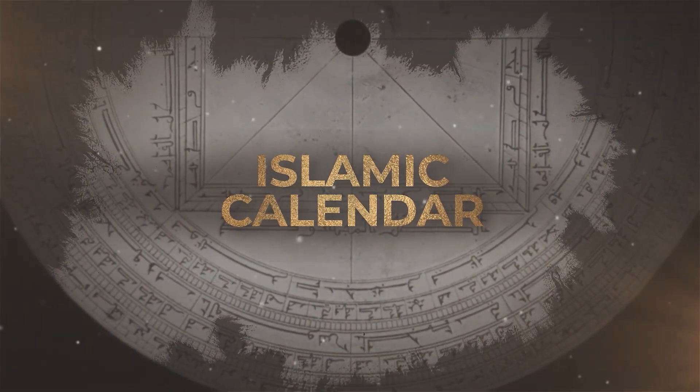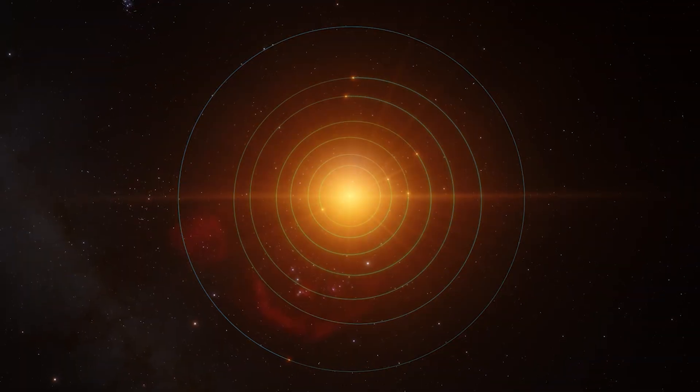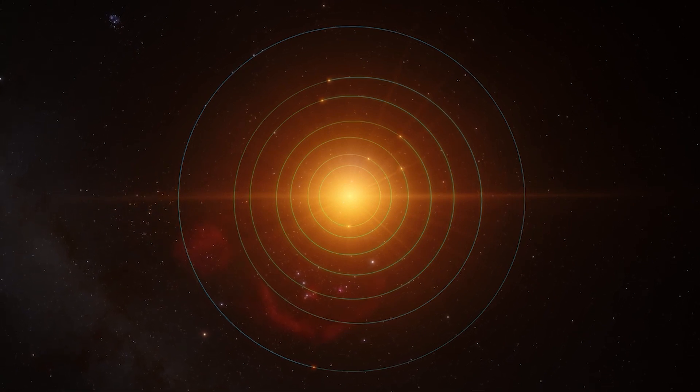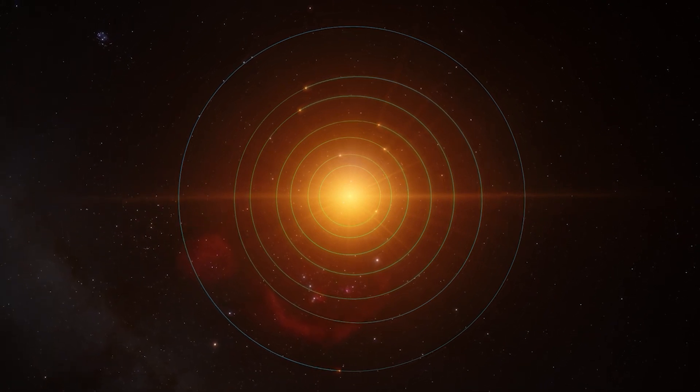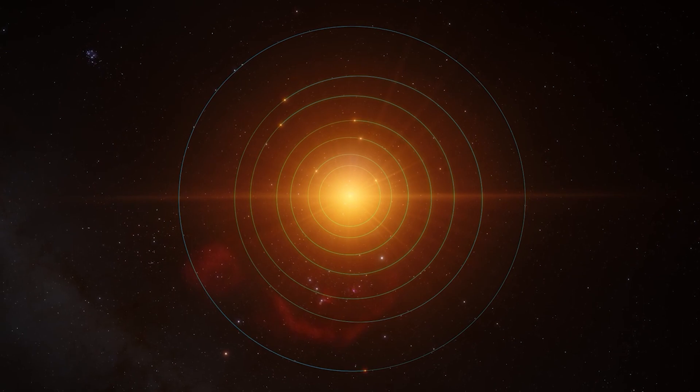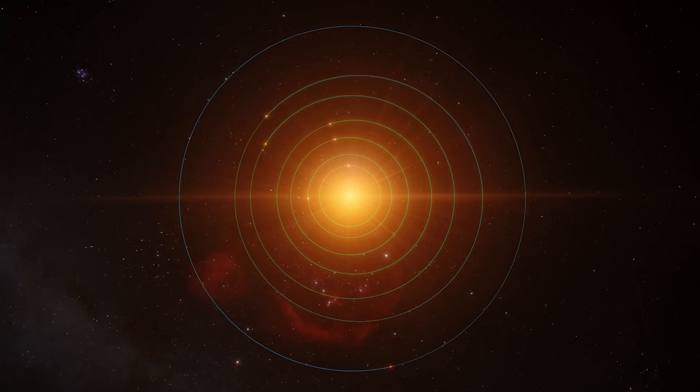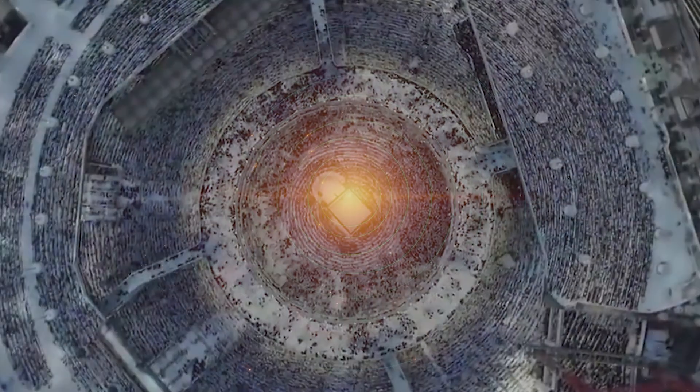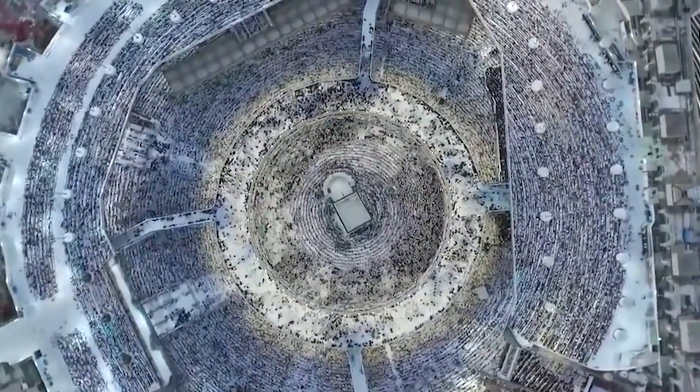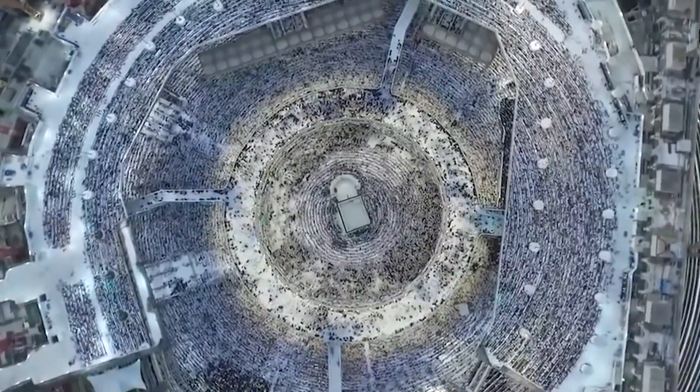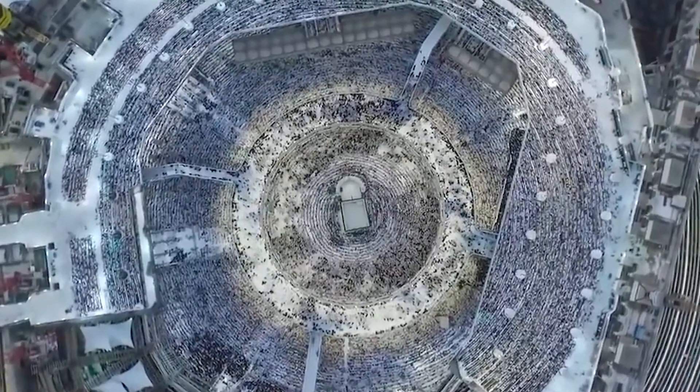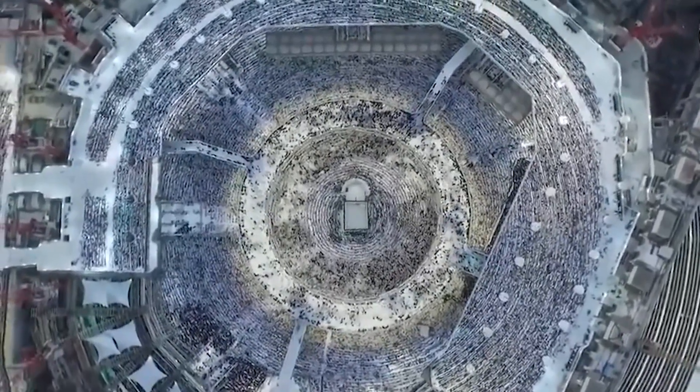All the planets revolve around the sun counter-clockwise. The moon rotates counter-clockwise, and the moon revolves around the earth counter-clockwise. The earth rotates counter-clockwise, and in this beautiful harmony, Muslims revolve around the Kaaba counter-clockwise as well. Such is the connection of Islam and astronomy.